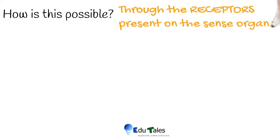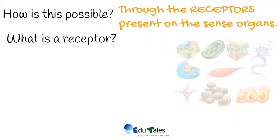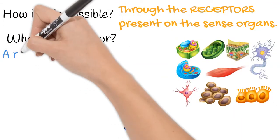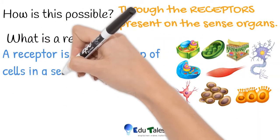Now what is a receptor? A receptor is a cell or group of cells in a sense organ which is sensitive to a particular type of stimulus.